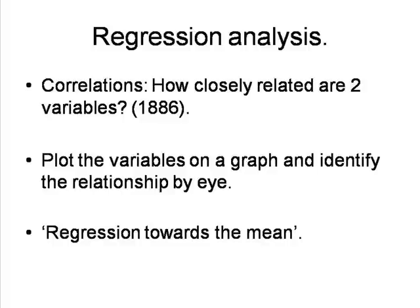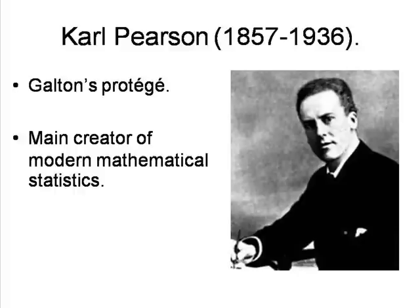Galton then went further, seeing that in one of the relationships he was studying — that between the heights of adult children and their parents — there was what we would now call regression towards the mean. That is, although tall parents normally had tall children, and short parents short children, the children were likely to be less tall or short, that is closer towards the mean, than their parents. Some years later, the British biometrician Carl Pearson, Galton's protégé and later biographer, worked out a way of calculating the coefficient of correlation mathematically, without the need for a scatter diagram. This was the regression value r, with correlations varying between 1, a perfect co-variation, and 0, no variation whatsoever. And this has remained the standard method of correlational analysis to the present day.